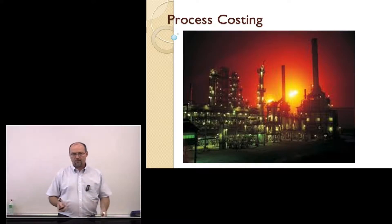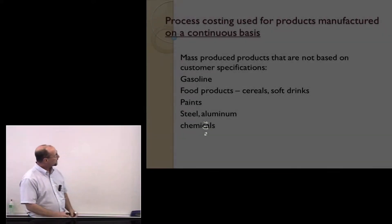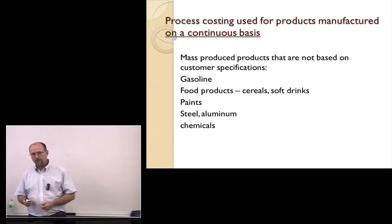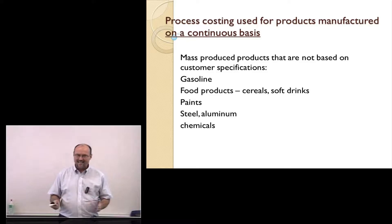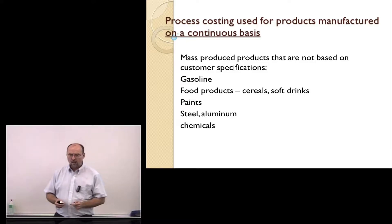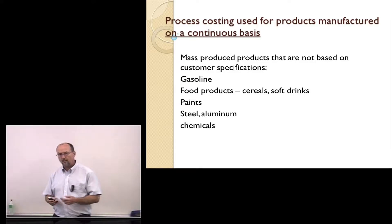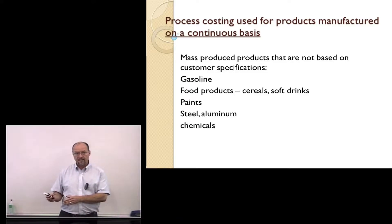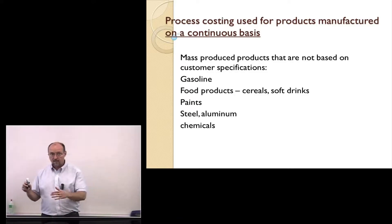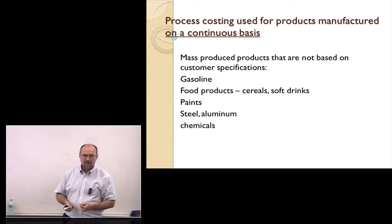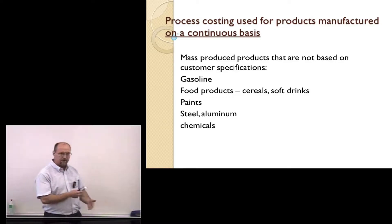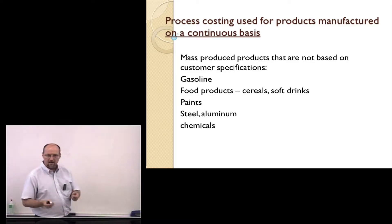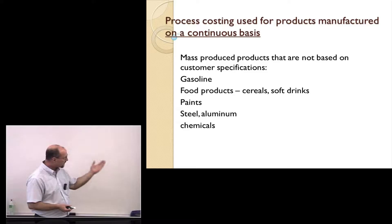Today we're going to talk about process costing. Process costing is used when a company manufactures the same product day in and day out. Unlike certain products, for example cabinets, which you have to build to customer specifications based on the size of a kitchen, the height of the ceiling, preferences, et cetera. Gasoline, you make the same stuff day in, day out. Paint, corn flakes, nuts and bolts, washers, and chemicals.